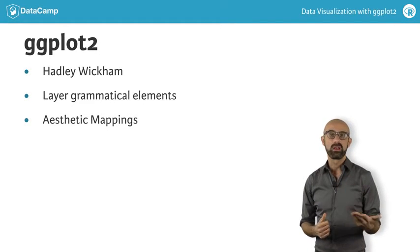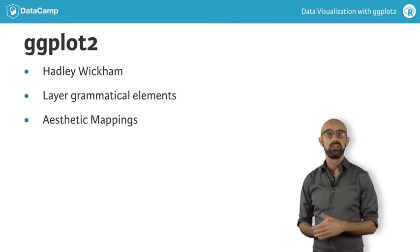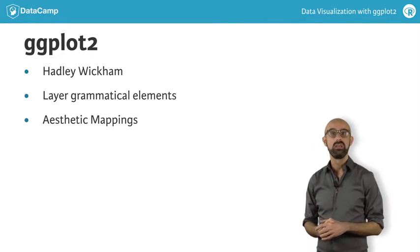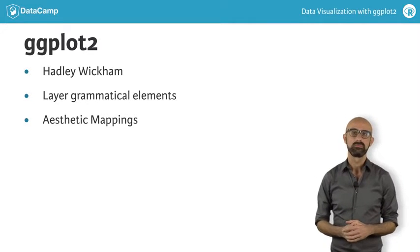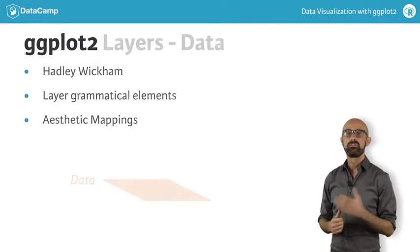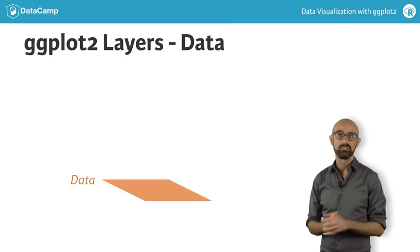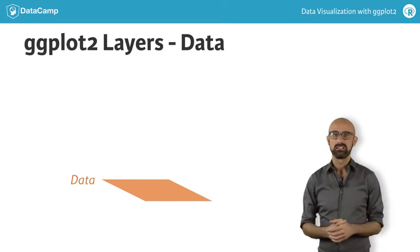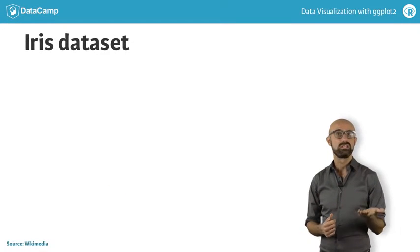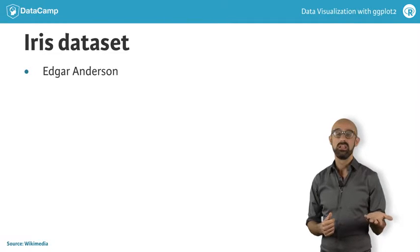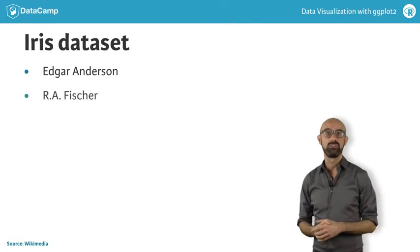We are going to go through each grammatical element in depth in this and the next course. Here, I'll introduce a dataset which will be used throughout the videos, and we'll go over some simple examples. The first layer is data. Obviously, we need some data to plot. I'm going to use several different datasets in the course videos, one of which is the classic iris dataset collected by Edgar Anderson in the 1930s and thereafter popularized by R.A. Fisher.